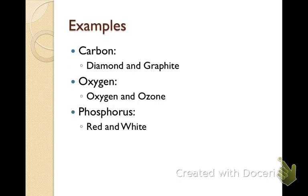Some examples you will need to know: carbon has two allotropes — diamond and graphite. Two allotropes of oxygen are O2, which is the oxygen we breathe in, and O3, which is ozone. And then we have phosphorus — we have red and white versions of phosphorus. If you look at the head of a match, you'll see it has that red tip.